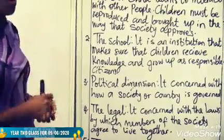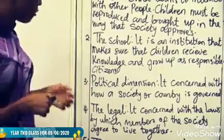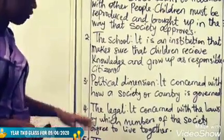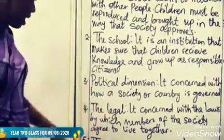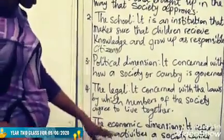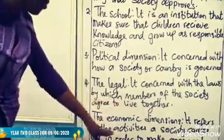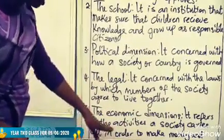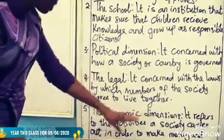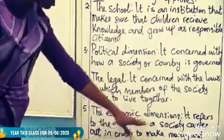If you fail to abide by the rules of society, you will be arrested or given a serious punishment. That is the legal dimension. Number five, we have the economic dimension. The economic dimension refers to the activities a society carries out in order to make money and develop.